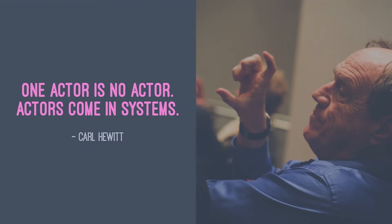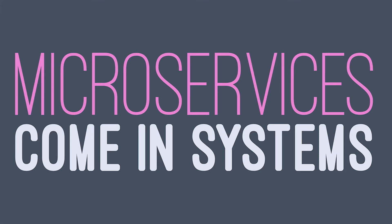Now we have a pretty good understanding of what characterizes a single individual microservice. However, one microservice is not of much use — they always come as systems, and that's something a lot of people forget. Just like humans, they act autonomously and therefore need to communicate and collaborate with others to solve problems. Individual microservices are fairly easy to understand and implement. What is hard is all the things around them: discovery, coordination, security, replication, data consistency, failover, deployment, integration with other systems, legacy systems, and so on.